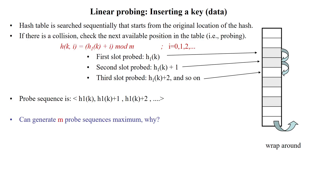Welcome to linear probing, which is one of the closed hashing techniques or open addressing techniques. Here the hash table is searched sequentially, starting from the original location of the hash value. The hash value will be calculated using the method h1(k) + i mod m, where i is the probing index, starting from 0, 1, 2 until m minus 1.